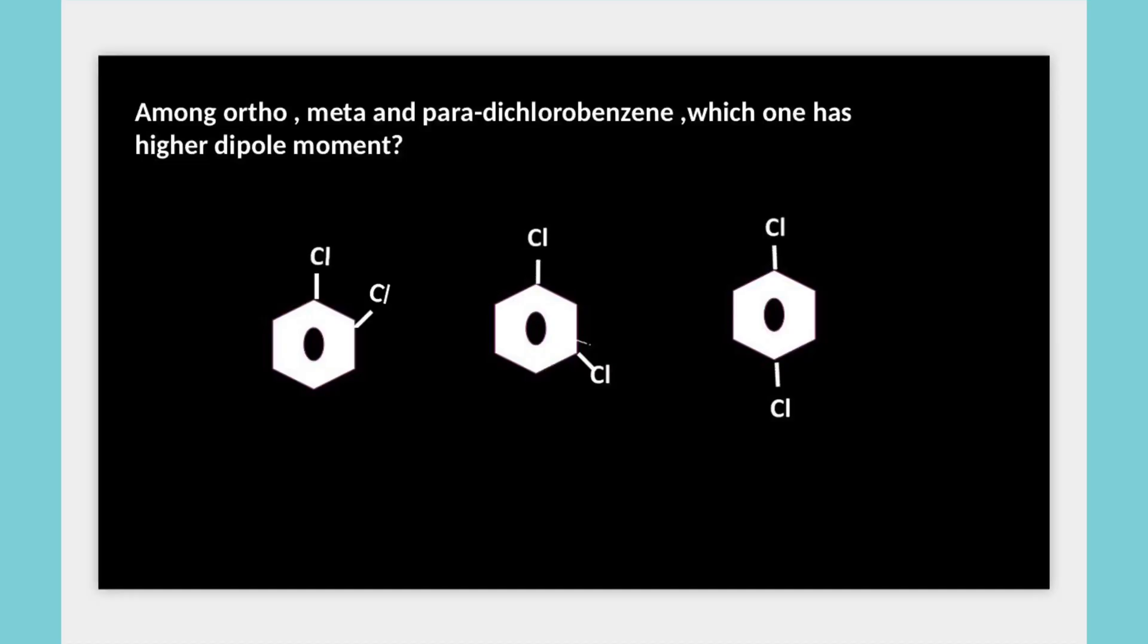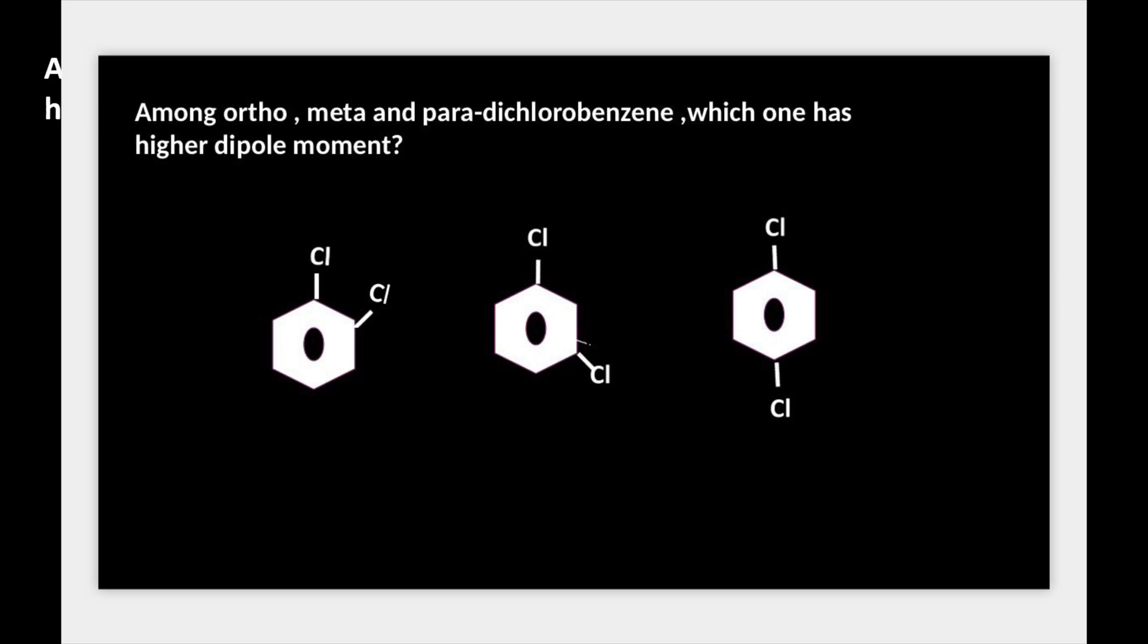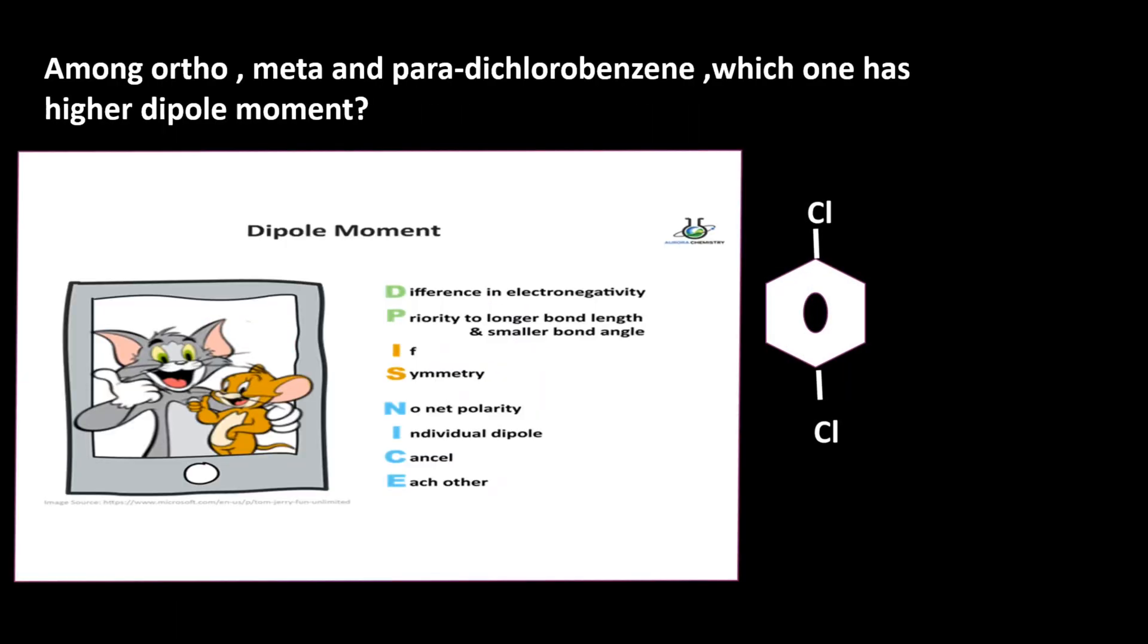Among ortho, meta, and para dichlorobenzene, which one has higher dipole moment? Let us use the mnemonic DP is NICE. In that, IS means if symmetry, then no net polarity - individual dipoles cancel each other. If you see para dichlorobenzene, both chlorine atoms are opposite to each other.